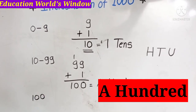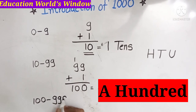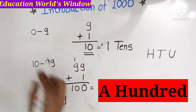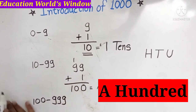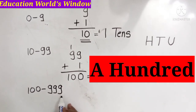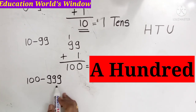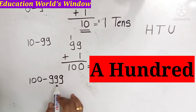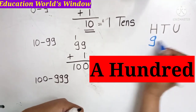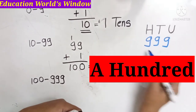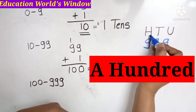The biggest 3-digit number is 999. So we have 1-digit numbers, 2-digit numbers, and 3-digit numbers up to 999. Here is 999, this is 10, this is 100.